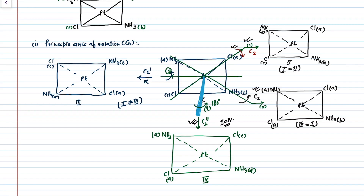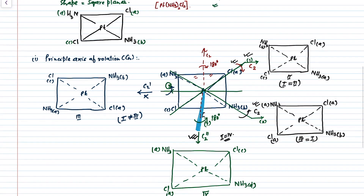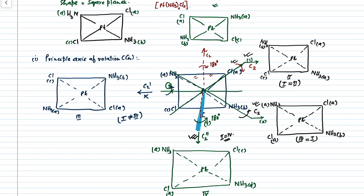One more axis is visible, the last axis, passing through platinum and bisecting the line joining the chlorine and ammonia. When we do the C2 operation about this axis — rotating by 180 degrees — we get a new configuration: NH3 D, Cl C, Cl A, and NH3 B, giving structure 6. When we compare structure 6 with structure 1, they are not equivalent to each other. So this C2 is not a symmetry element.